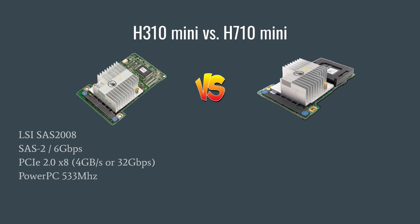First let's start with the H310 mini, which is based on the LSI SAS 2008 chipset. This is a 6 gigabit SAS 2 chipset with a PCIe 2.0 x8 connection, which gives you about 4 gigabytes per second, or 32 gigabits per second of bandwidth on the PCIe bus. The LSI SAS 2008 chipset is basically a single core PowerPC processor that runs at 533 MHz.